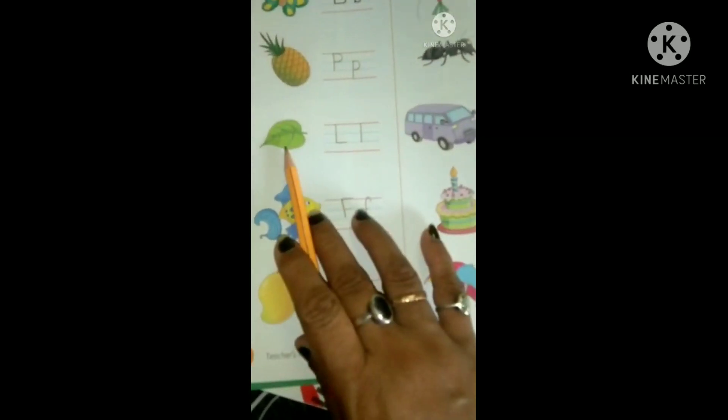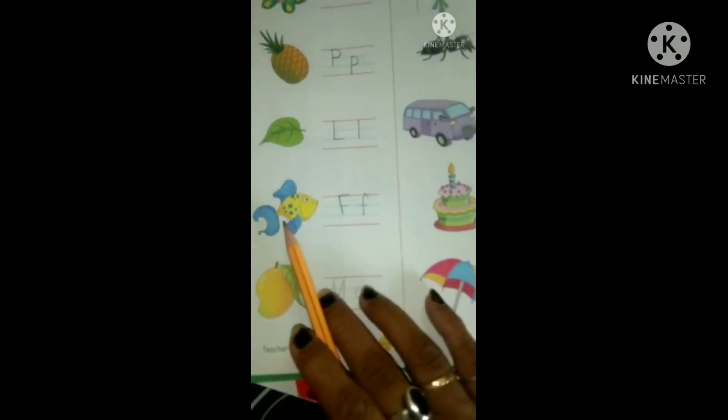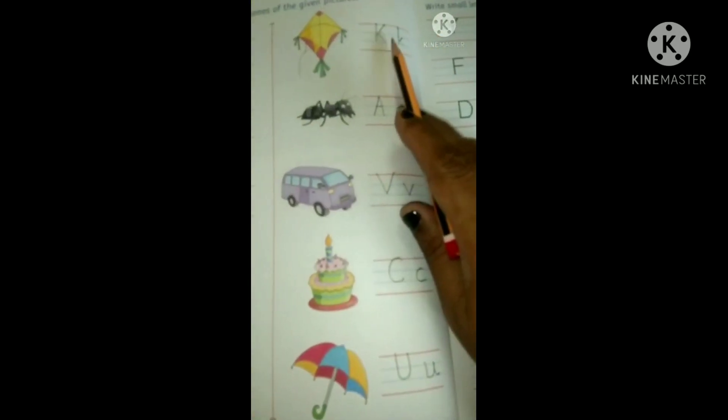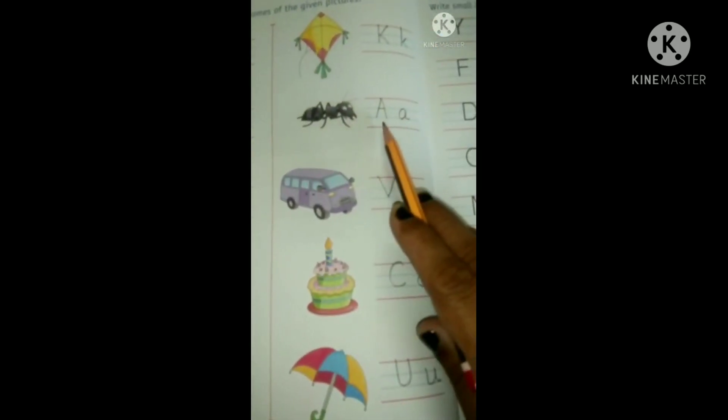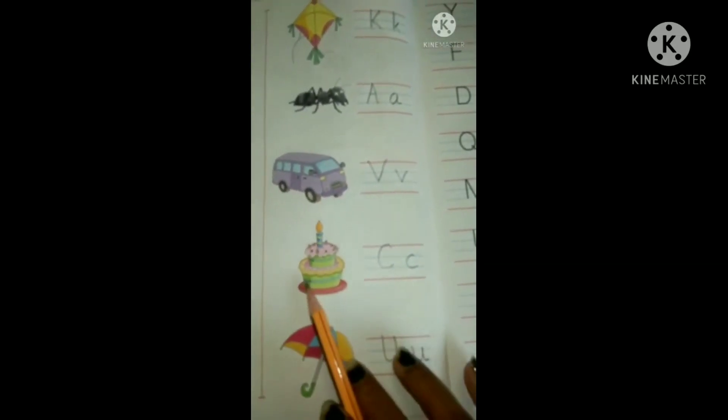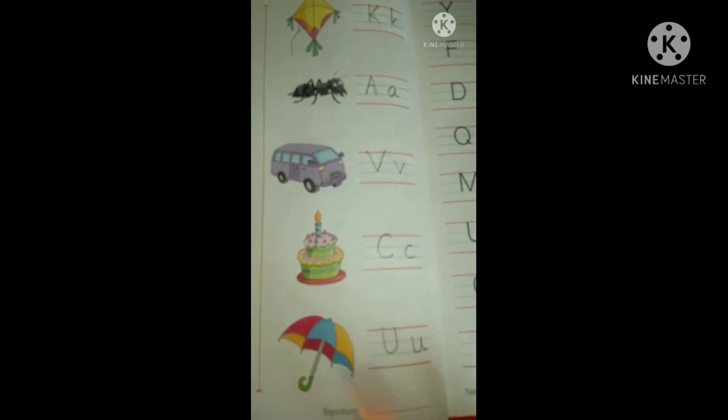L for leaf, F for fish, M for mango, K for kite, A for ant, V for van, C for kick, U for umbrella.